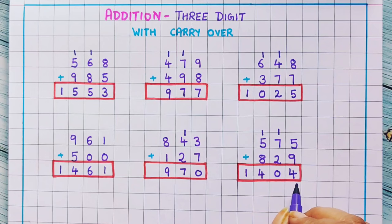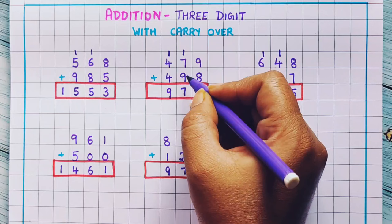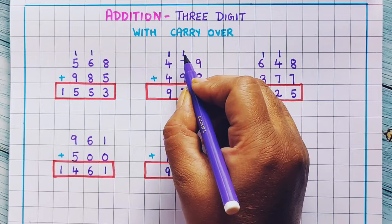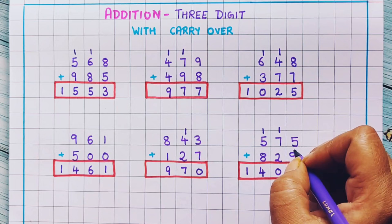Now remember one very important thing here. I have seen many children who do this addition and write the carryover, but then forget to add this carryover when doing the addition of the next numbers. So it is very important that you write this carryover very clearly and then do the problems. I hope you understood the 3 digit addition with carryover. If you enjoyed this video, do give it a like, share this video and subscribe to our channel. Bye.